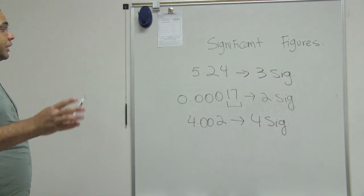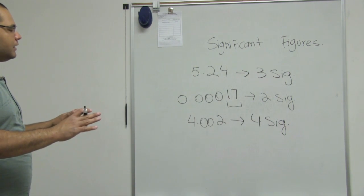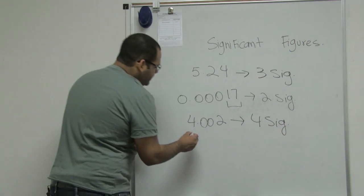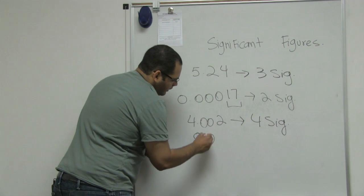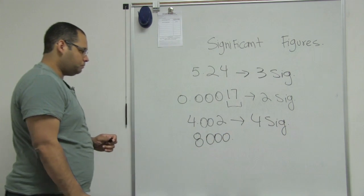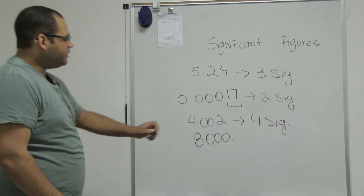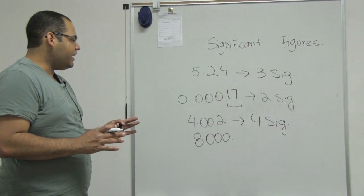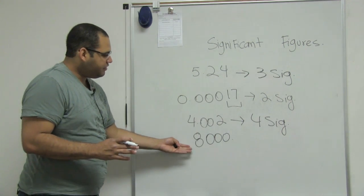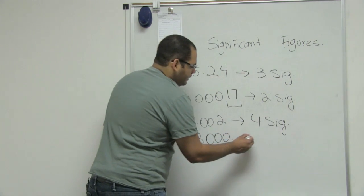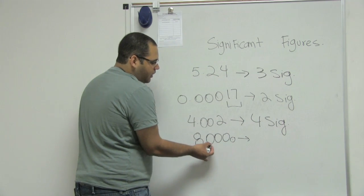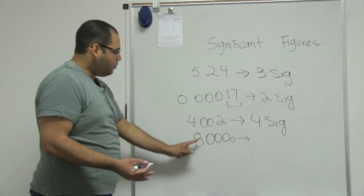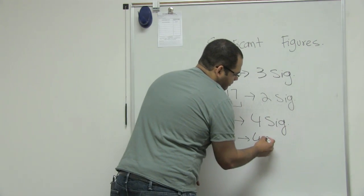The third rule, which is connected with the fourth rule related to zeros, is that if I have a zero on the right side and I have a dot after the zeros, then I will count it as sig figs. Because I have this dot, I know that all three zeros need to be counted in the sig figs. So one, two, three, four — I have four sig figs.